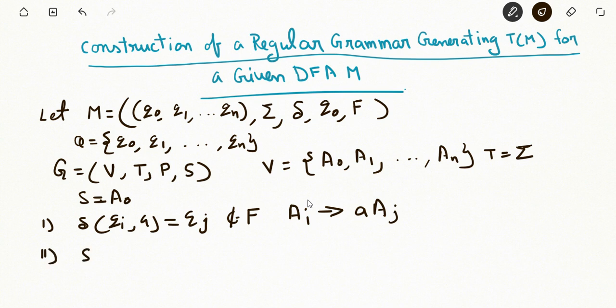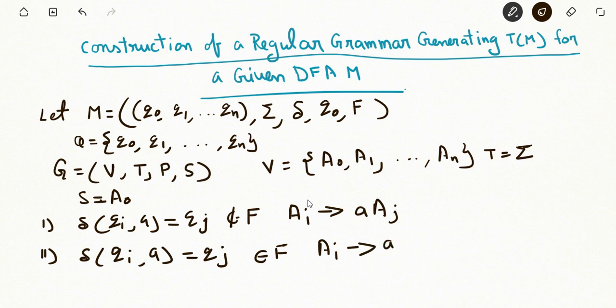If δ(qᵢ, a) = qⱼ and qⱼ belongs to the final state, then we are going to introduce two productions: one is Aᵢ → a Aⱼ, and Aᵢ → a. In this way we are going to construct the grammar for the given DFA M, which generates the language L(M), giving us the corresponding regular grammar. Now consider one example.